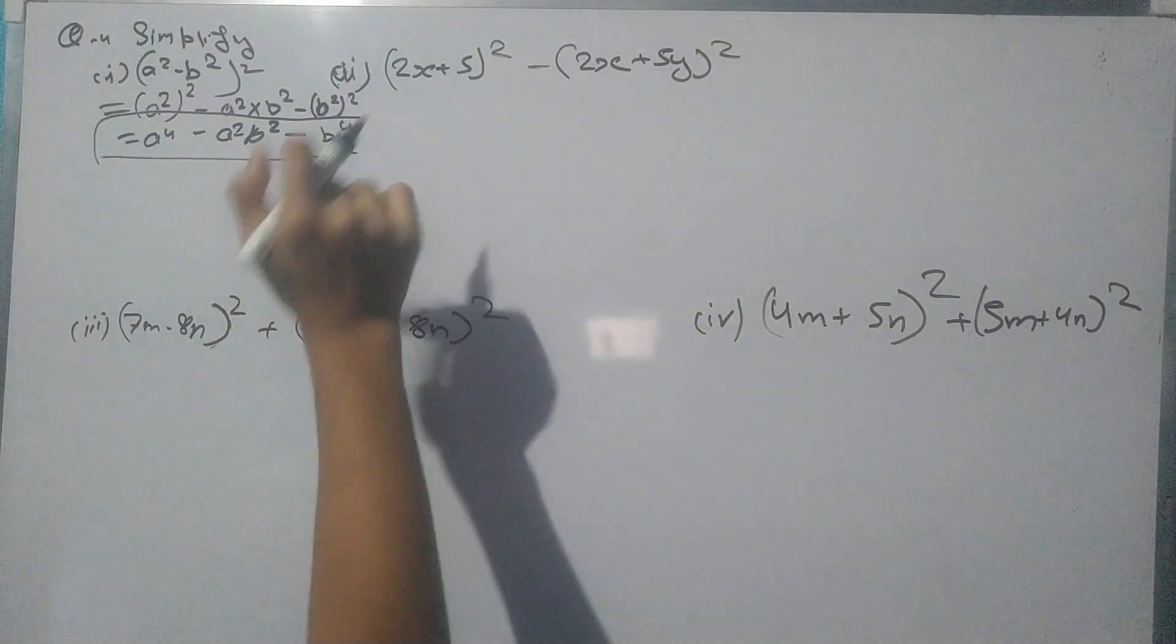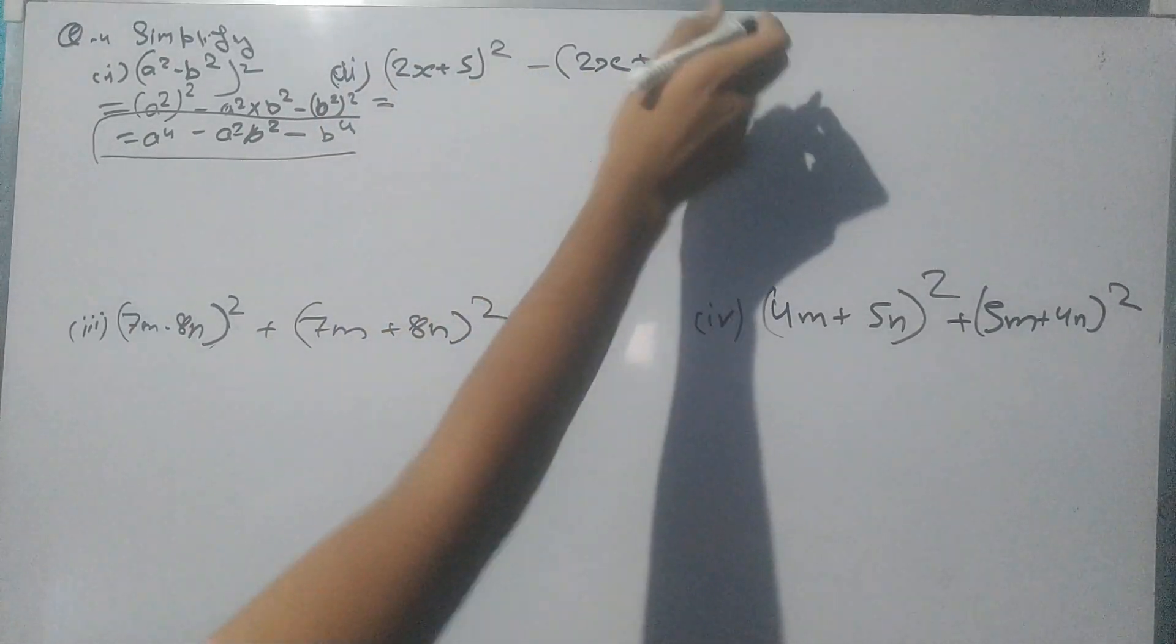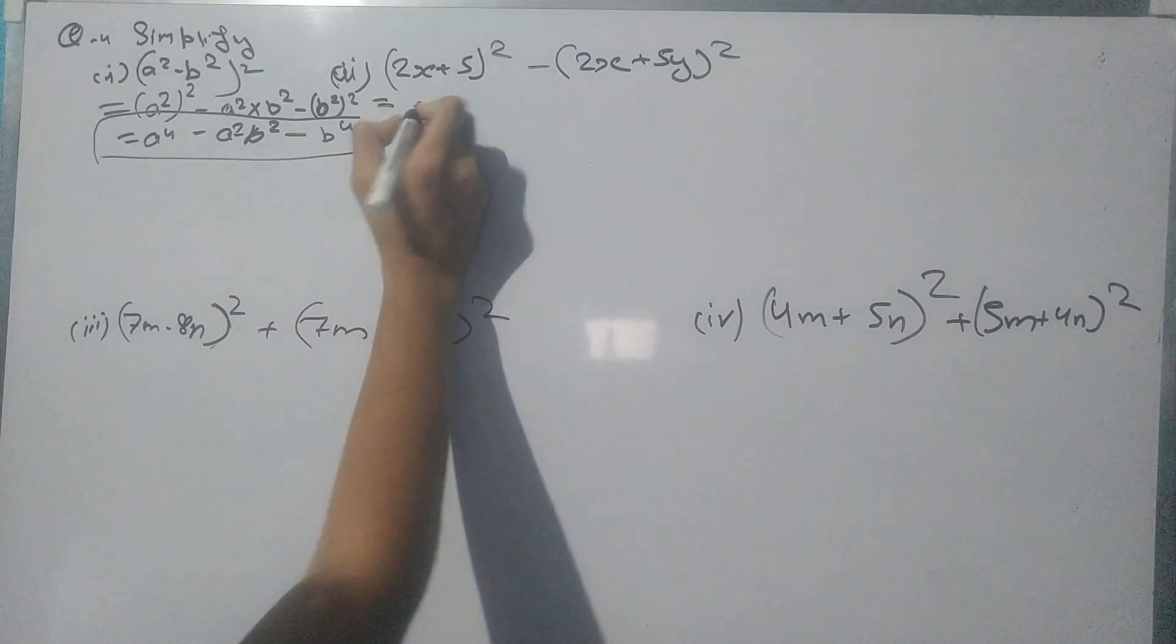Now coming to the second part. In the second part, (2x + 5)² - (2x + 5)² - we got two different expressions.